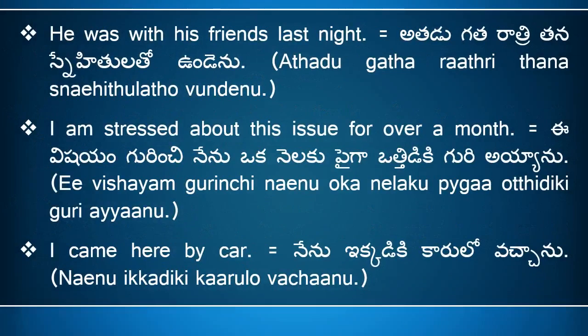'He was with his friends last night' means 'atadu, gataratri, tanasnehitulutho unndenu.' Here, 'he' means 'atadu,' 'was' means 'unndenu,' 'with' means 'to,' 'his' means 'tana,' and 'friends' means 'snehitulutho unndenu.' When we say 'with his friends,' we say 'tanasnehitulutho.' 'Last night' means 'gataratri' — 'night' means 'ratri.' So the full sentence is 'atadu, gataratri, tanasnehitulutho unndenu.'